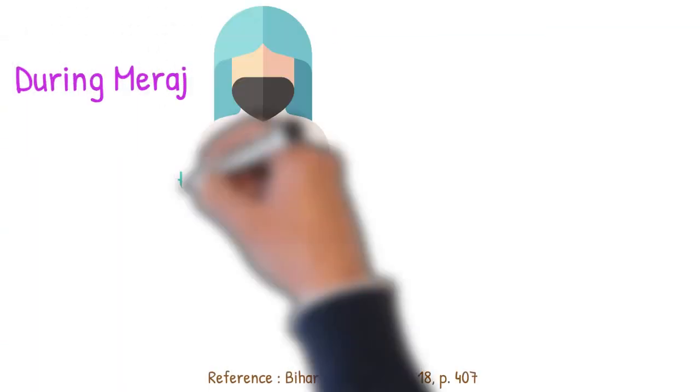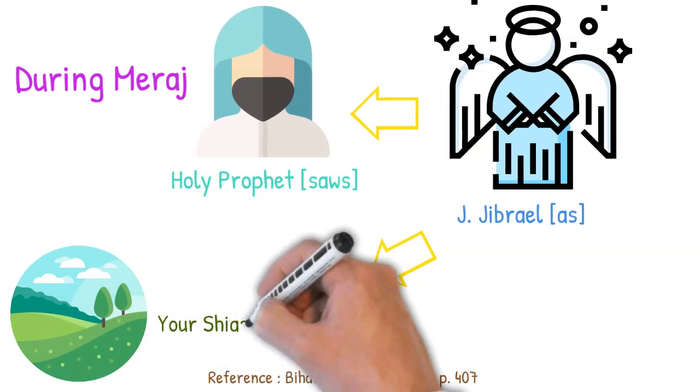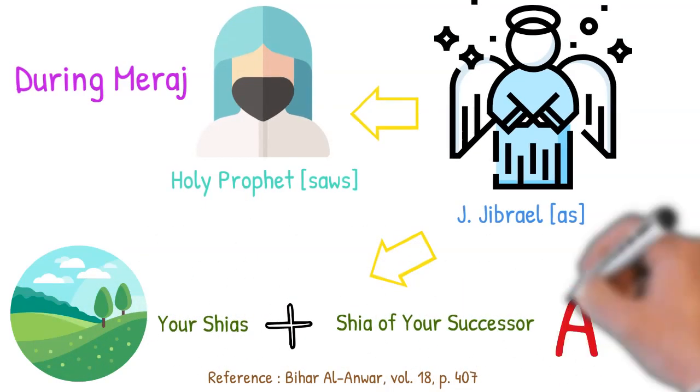During Mehraj, the Holy Prophet was told by Jibril that this is the land of your shia and the shia of your successor, Ali.